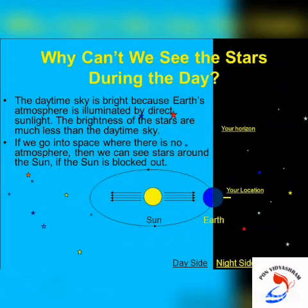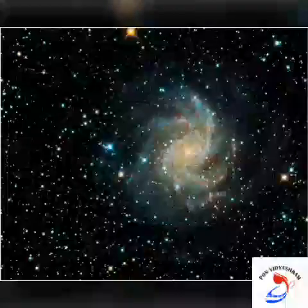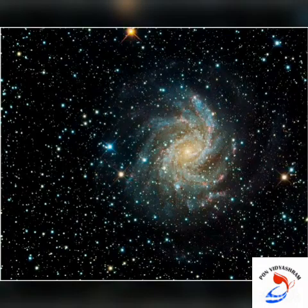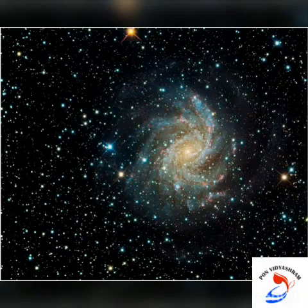You might think you could see stars during the day if you looked away from the Sun, but the Sun's light is spread all over the sky by our atmosphere — which is part of the reason the sky is blue during the day. Countless twinkling stars in the night sky are similar to the Sun, but we do not feel their heat or light, and they look tiny because they are very, very far from us.